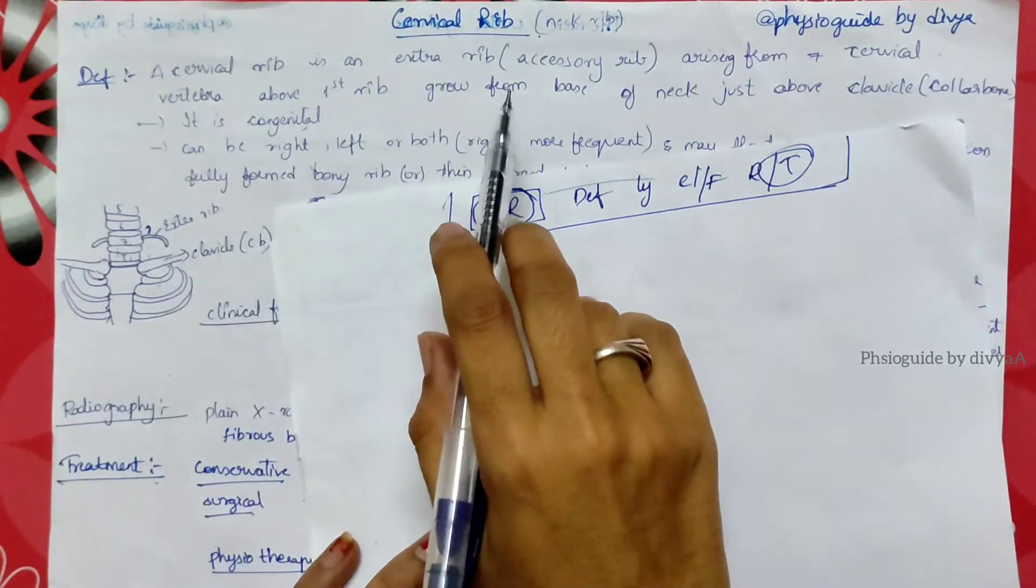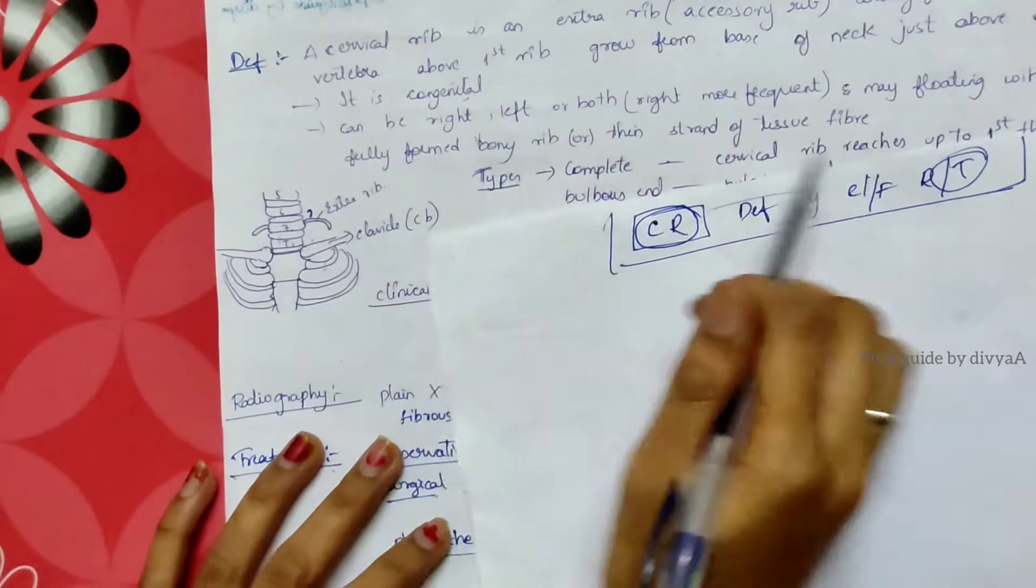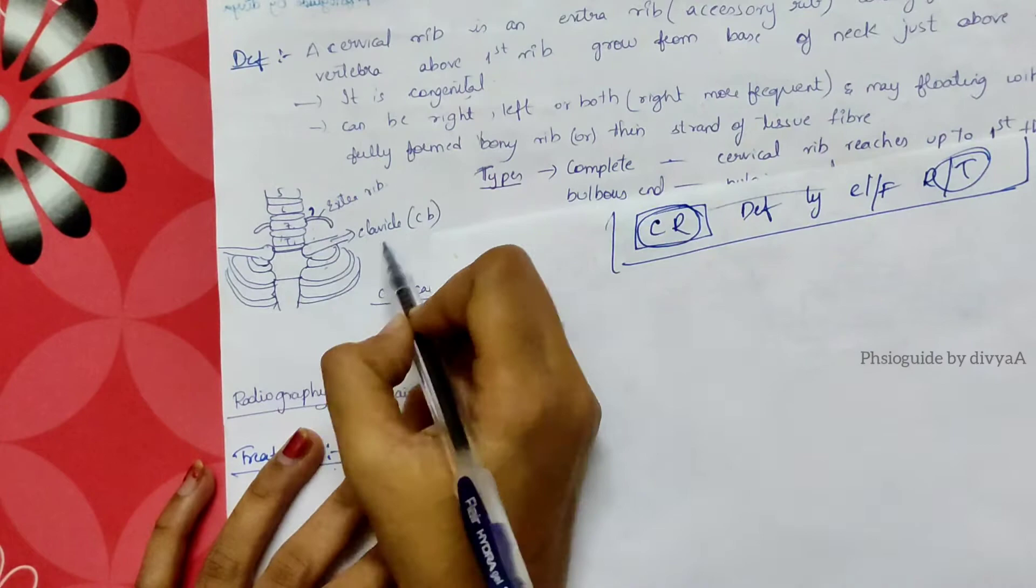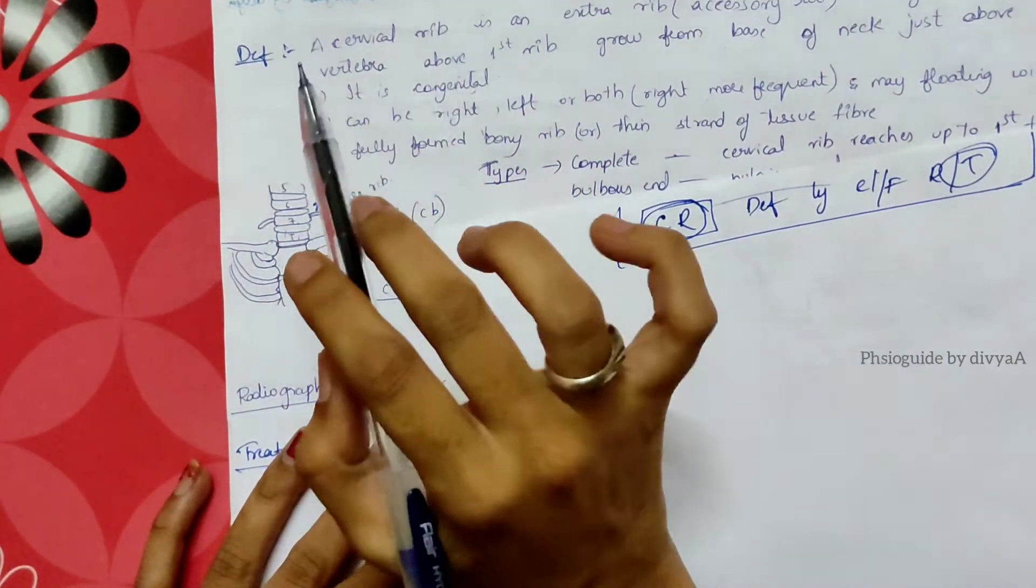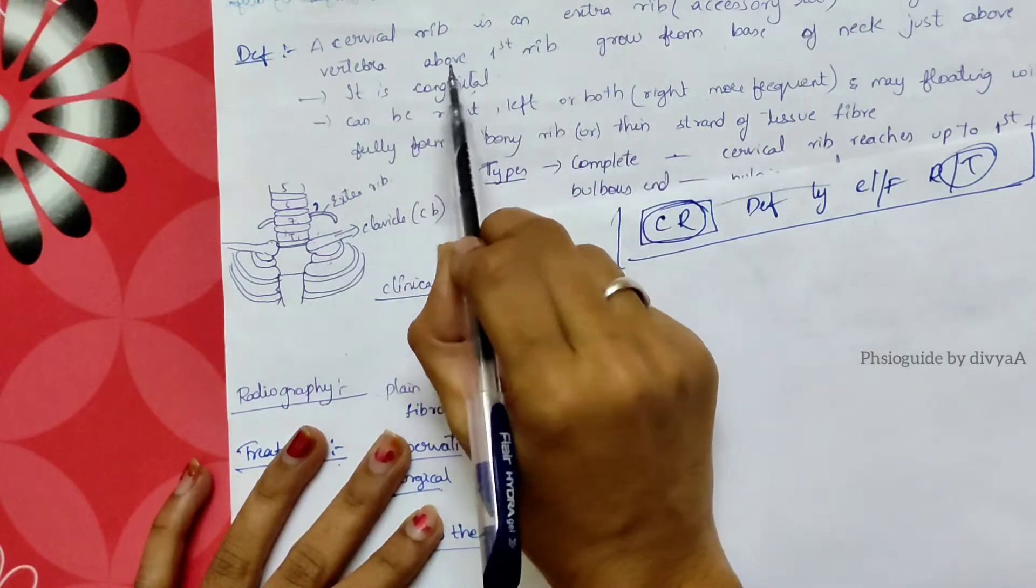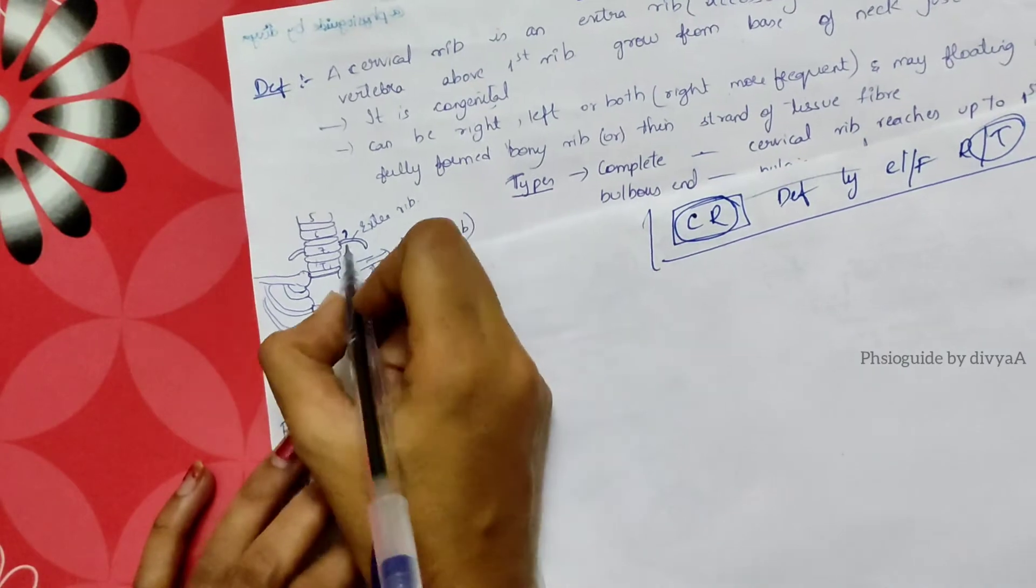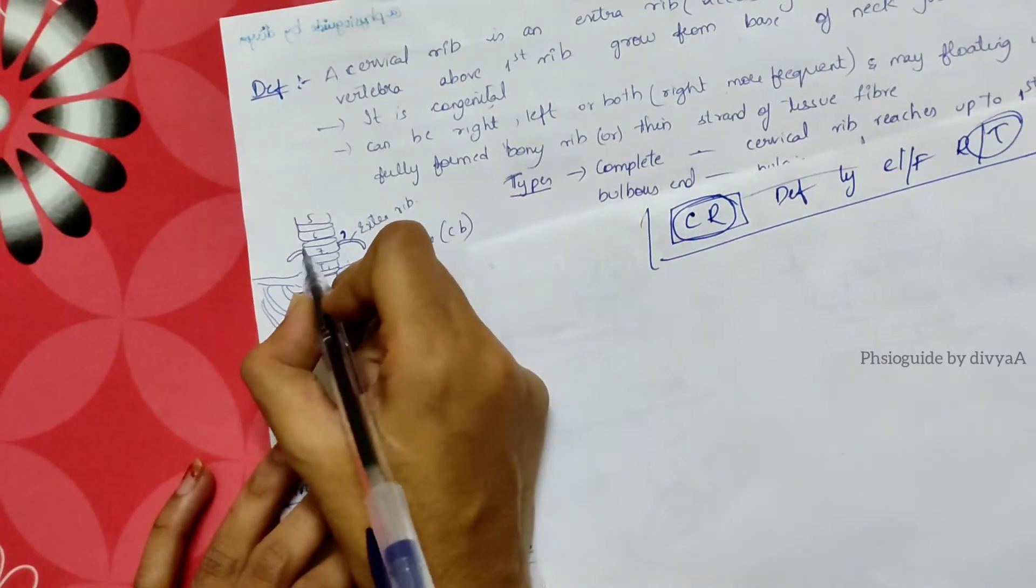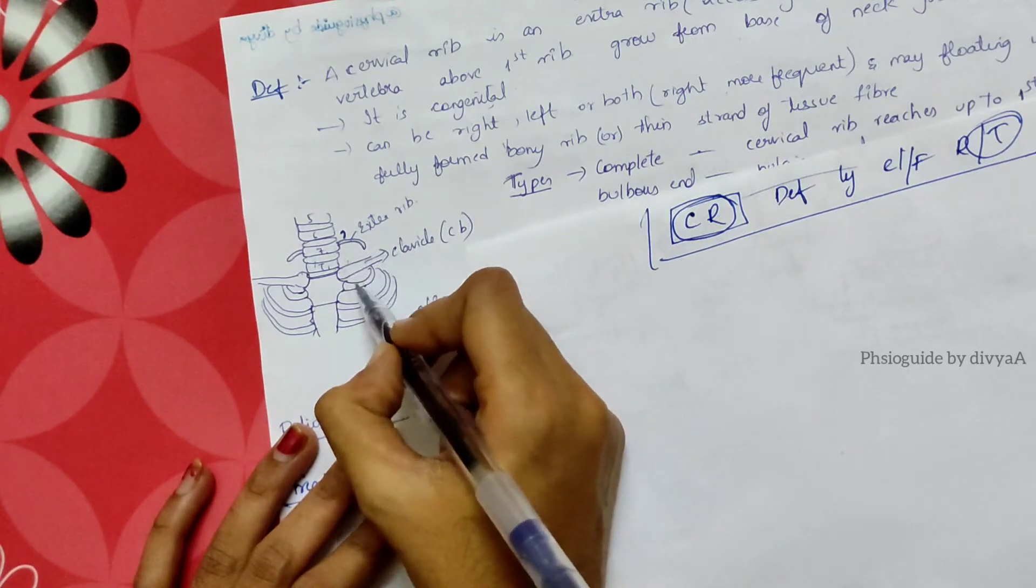I've explained the definition of cervical rib in the previous video. Take a look at it in the diagram. If you draw the diagram it will be clearly understood by you. Cervical rib is an accessory rib, meaning an extra rib arising from the seventh cervical vertebra above the clavicle.